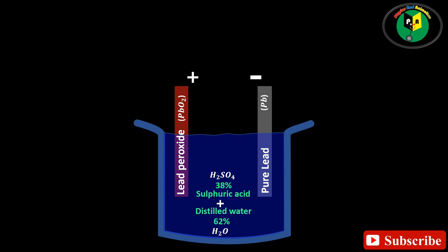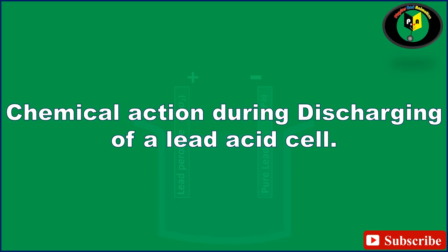Now let's move forward and talk about the working and the chemical reaction taking place in the lead acid cell. 6. Chemical action during discharging of a lead acid cell.